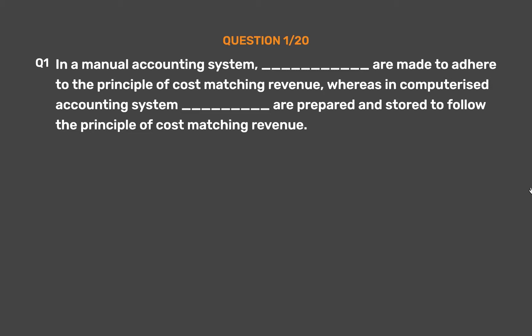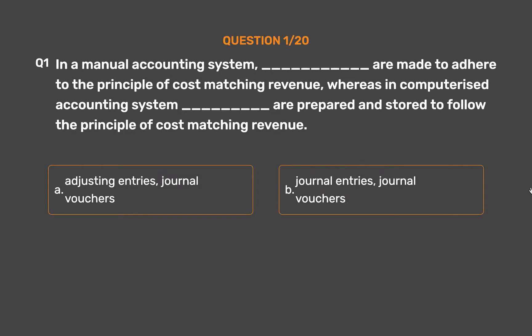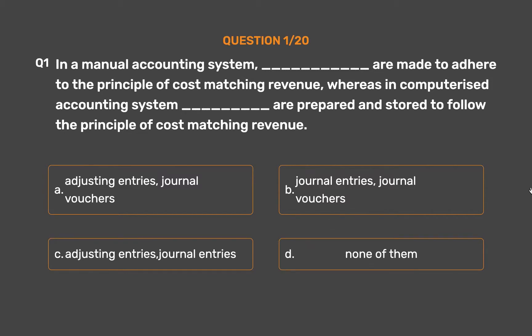Question number 1. In a manual accounting system, __ are made to adhere to the principle of cost matching revenue, whereas in a computerized accounting system, __ are prepared and stored to follow the principle of cost matching revenue. Option A: Adjusting entries, journal vouchers. Option B: Journal entries, journal vouchers. Option C: Adjusting entries, journal entries. Option D: None of them. The correct answer is Option A: Adjusting entries, journal vouchers.